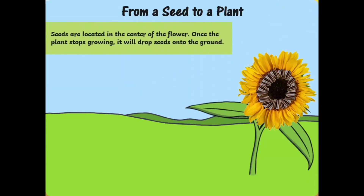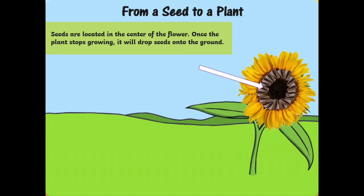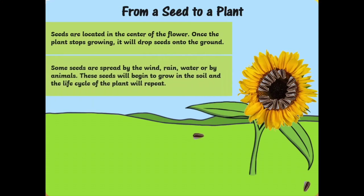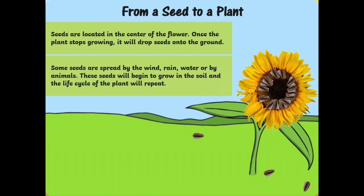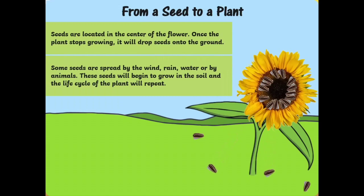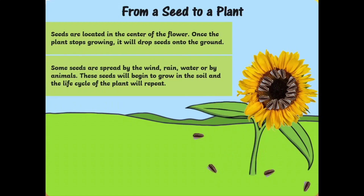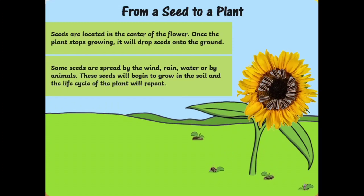Seeds are located in the center of the flower. Once the plant stops growing, it will drop seeds onto the ground. Some seeds are spread by the wind, rain, water, or by animals. These seeds will begin to grow in the soil, and the life cycle of the plant will repeat.